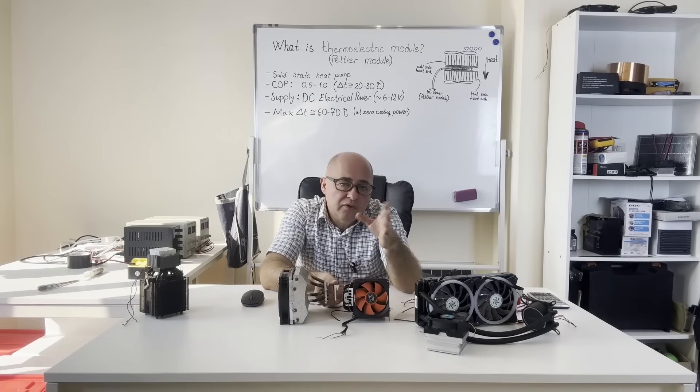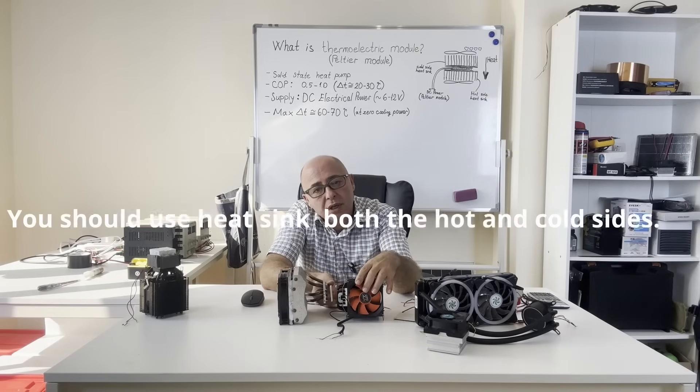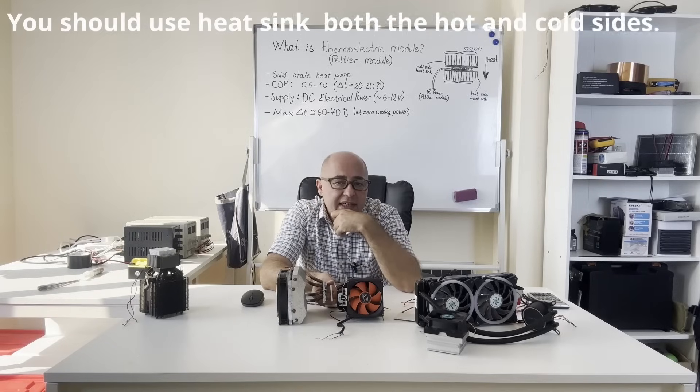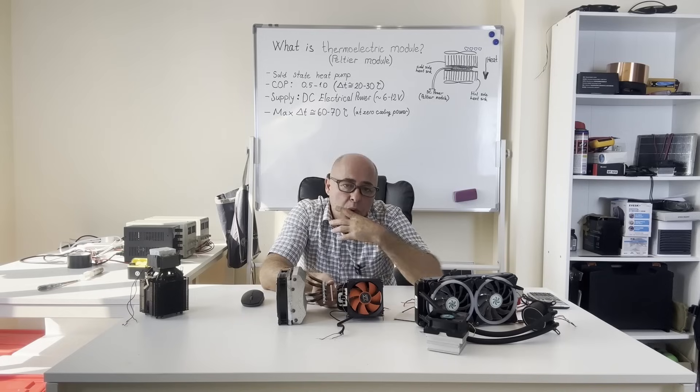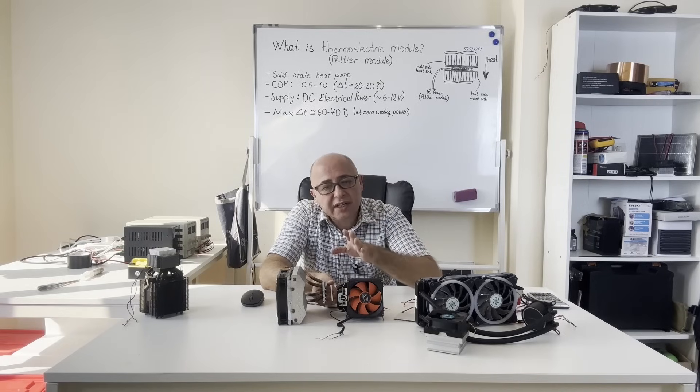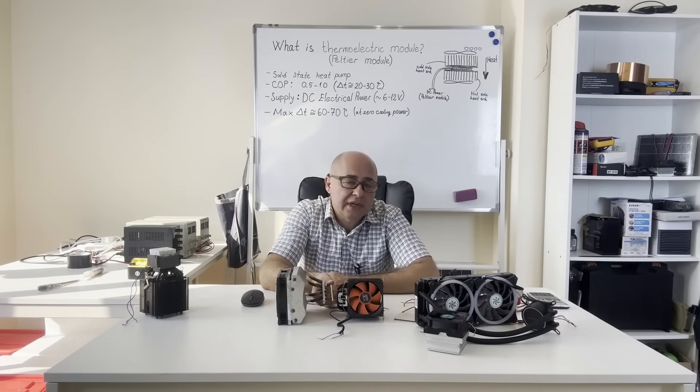Now, how do we get the best cooling performance? Here, I'll give you some information to get the best performance from Peltier modules. You should use heat sinks with the best possible performance for both hot and cold sides. The hot side heat sink should have a higher cooling capacity because all heat absorbed and generated from electricity is dissipated from the hot side.